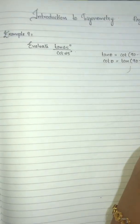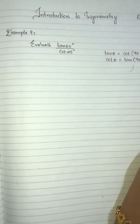Hi students, this is what we will discuss in the introduction to trigonometry, example 9. In page number 189, evaluate tan65 divided by cot25.